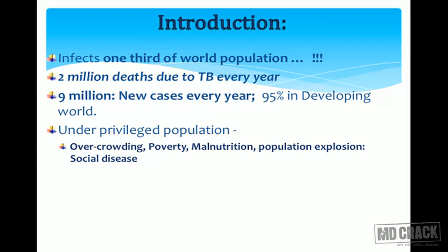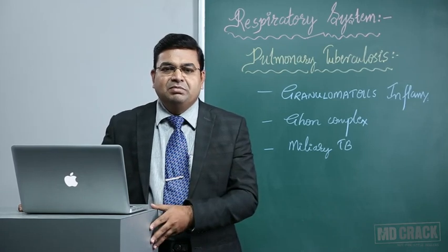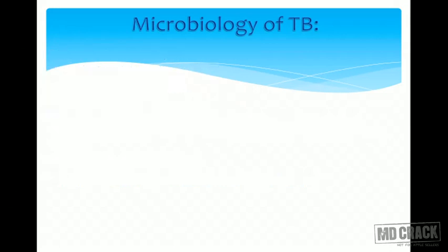The causes include overcrowding, population explosion, poverty, and malnutrition, which is a big problem. All these social factors interact with each other and cause the high burden of tuberculosis in society. Nowadays, HIV and AIDS are a major driver of this endemic, resulting in a highly increased incidence of tuberculosis since 1985. Other disorders like diabetes, immunosuppression, and drug resistance are also problems in the eradication of tuberculosis.